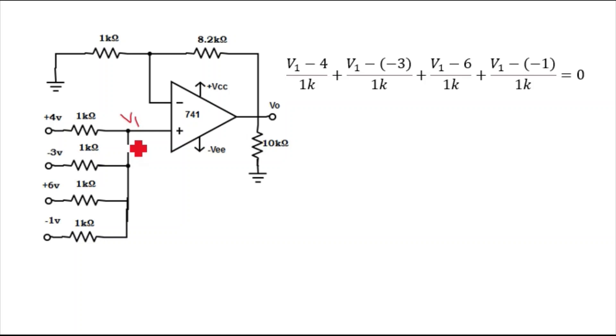All are connected through 1 kilohm resistance. If you know the summing op-amp formula, then you can directly calculate V1. But to avoid any possibility of error, let's do it with nodal analysis.